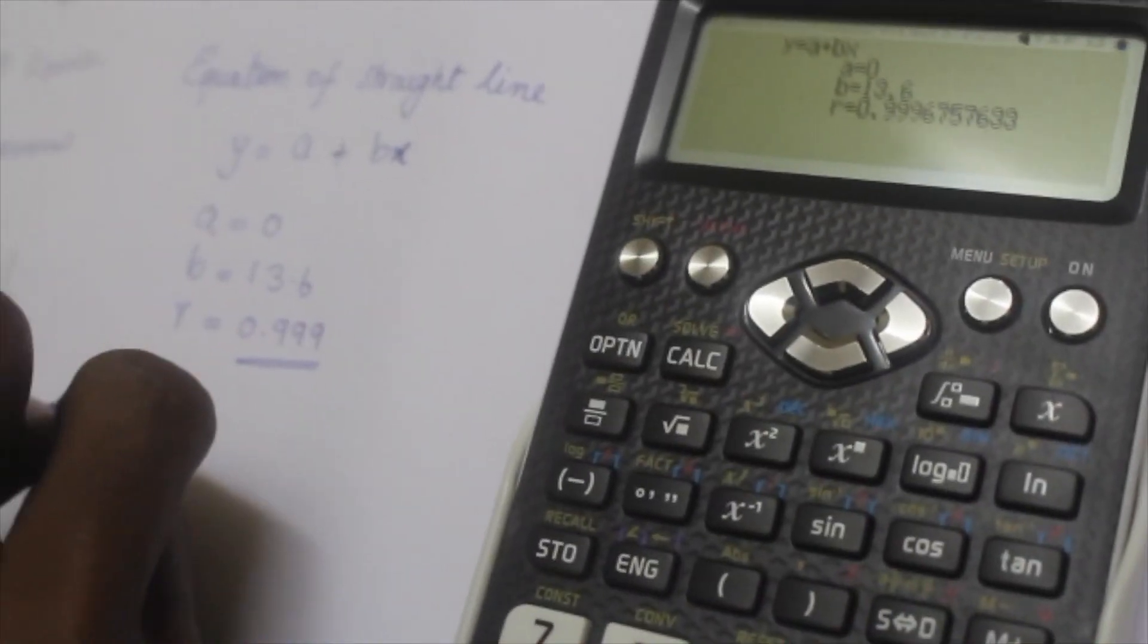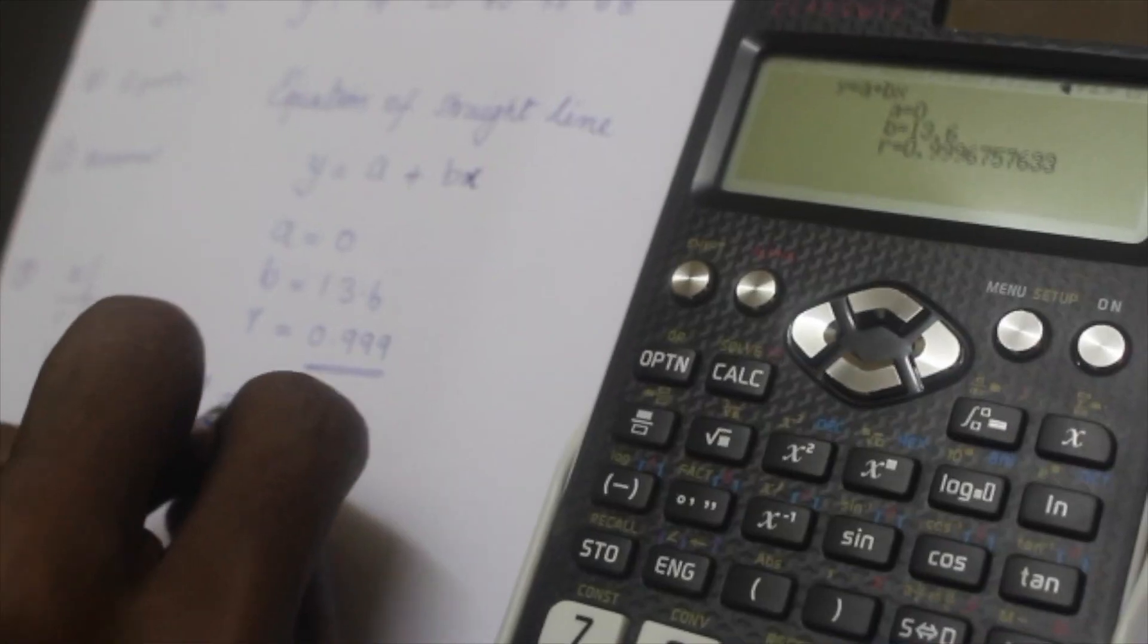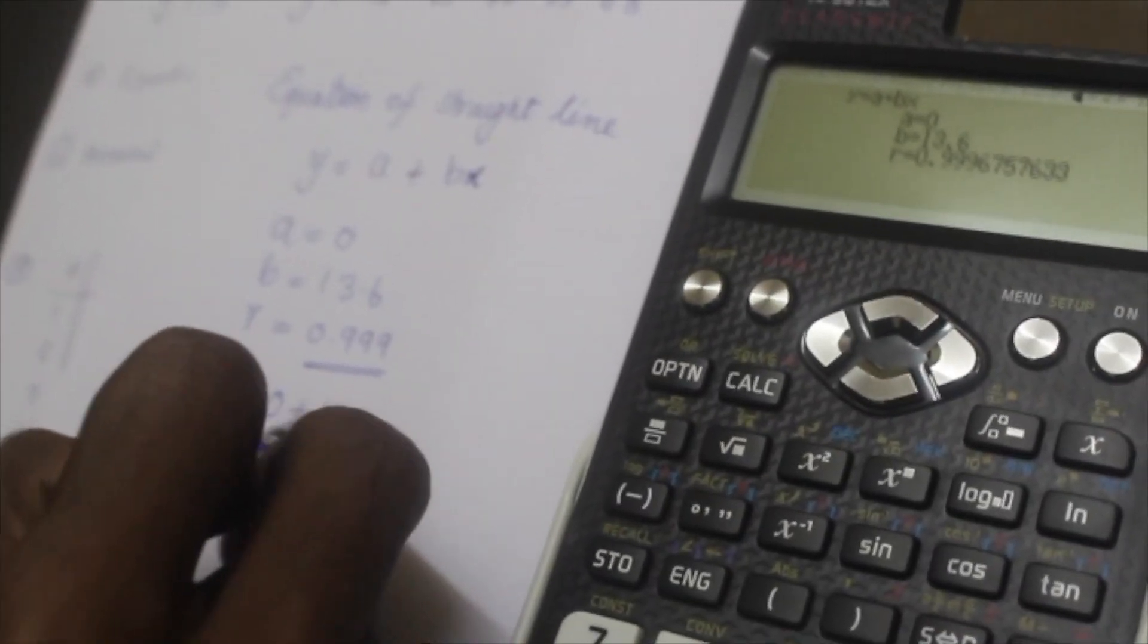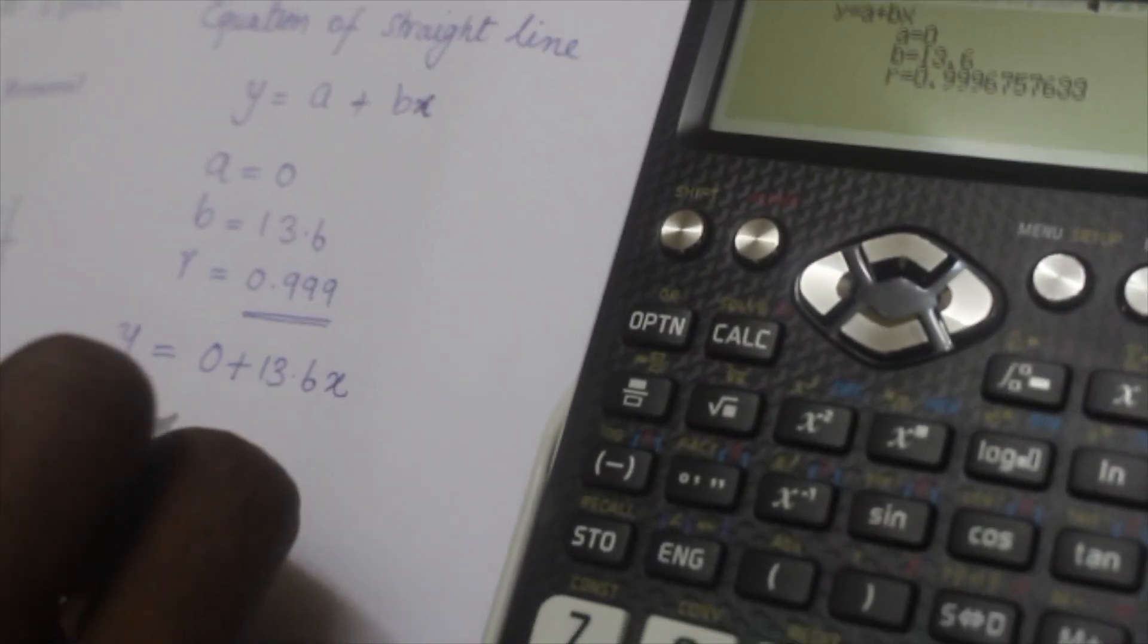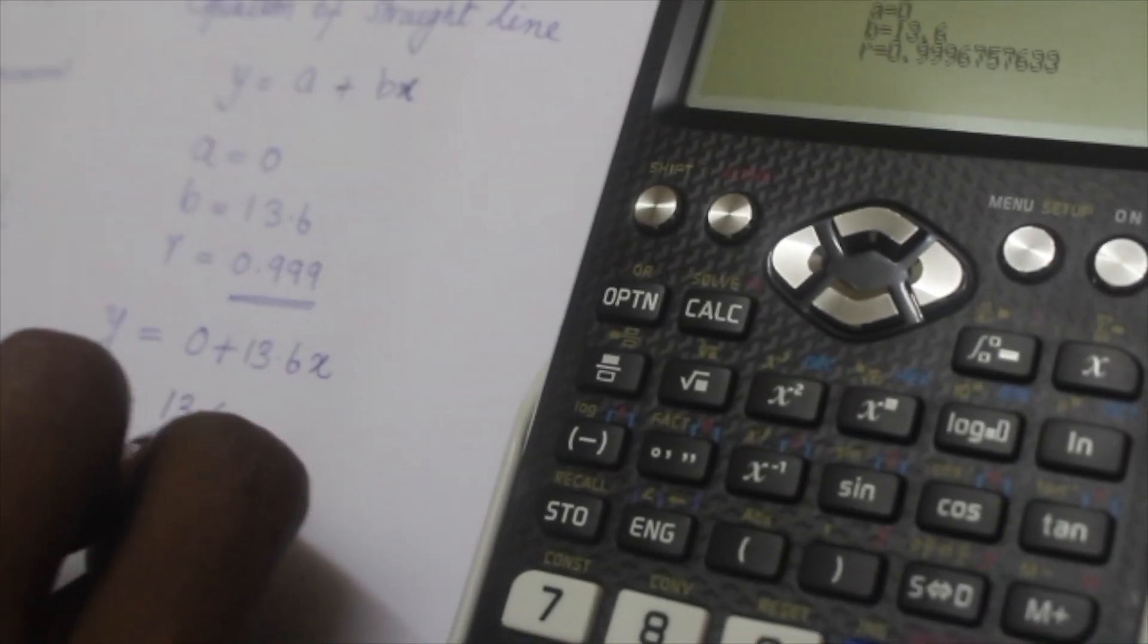You can write the equation as y is equal to 0 plus 13.6x, which means the y-intercept is 0 and the slope is 13.6.